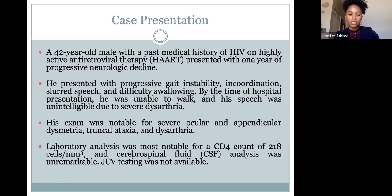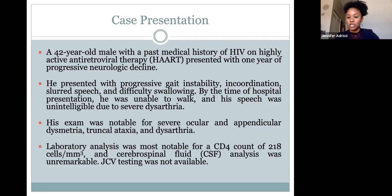This was an inpatient: a 42-year-old male with past medical history significant for HIV on HAART therapy. He presented with one year of progressive neurologic decline—specifically progressive gait instability, incoordination, slurred speech, and difficulty swallowing. By the time we saw him, he was unable to walk, his speech was largely unintelligible due to significant slurring, and on exam he had severe ocular and appendicular dysmetria, significant truncal ataxia, inability to even sit up on his own, and severe dysarthria. His laboratory analysis was most significant for a CD4 count of 218. Basic CSF analysis—cell count, glucose, protein, gram stain—was unremarkable; however, JC virus testing was not available.